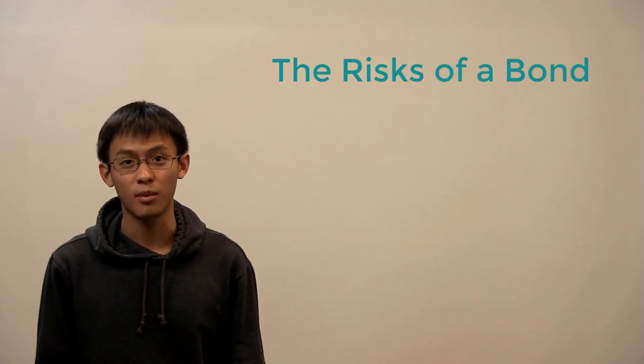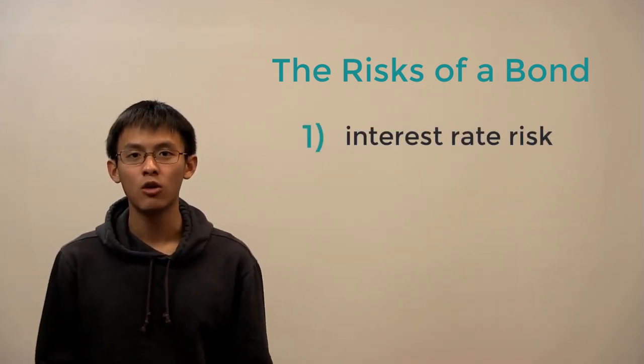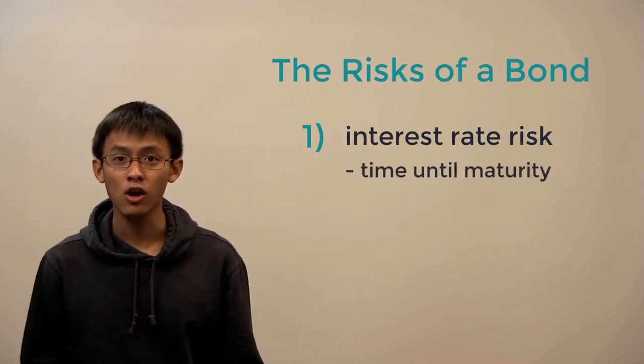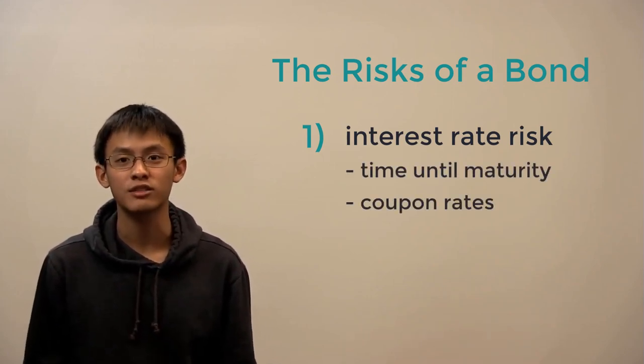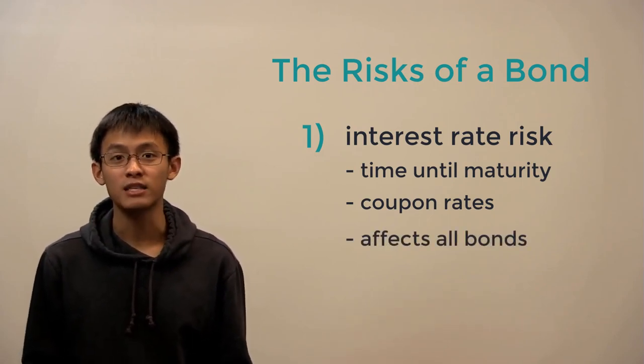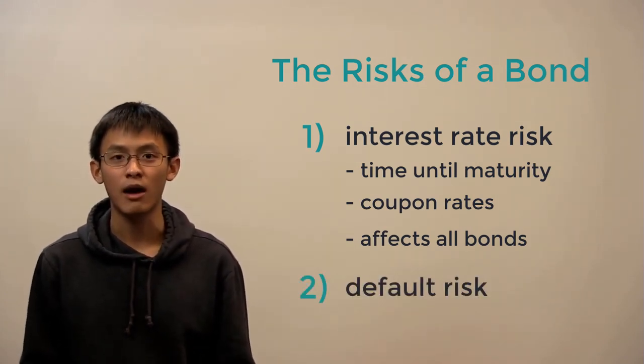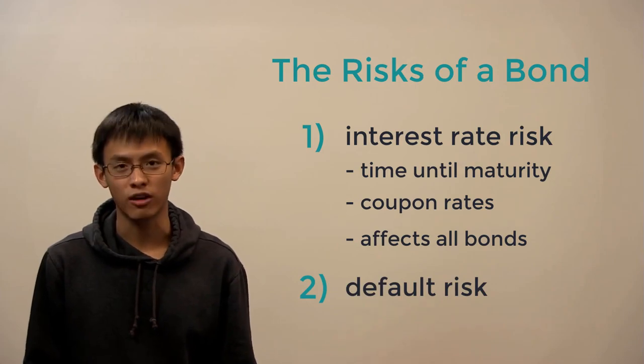Hello everyone, ready to learn some finance? Let's continue our discussion of bonds. Over the next two videos we'll talk about the different properties of bonds and how they affect the risk of a bond. In this video we'll talk about interest rate risk. We'll learn that bonds with longer terms or lower coupon rates are more sensitive to interest rate risk. This risk affects all bonds, even Treasury bills that we think of as being risk-free.